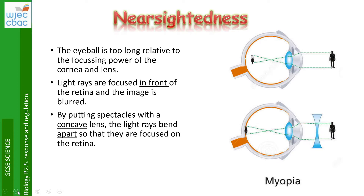By putting on spectacles that have a concave lens — in other words they bend in — the light rays are bent apart so they focus on the actual back of the retina, on the screen of the eye.